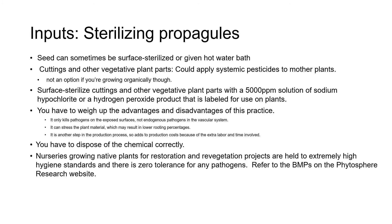Some nurseries surface sterilize propagules. In our module on seed I mentioned disinfecting seed with bleach solutions or hydrogen peroxide, and hot water baths for killing pathogens inside the seed are sometimes used. These treatments can also damage the seed and the temperature and length of time for which a seed is given a hot water bath can be species specific. So take great care if you're going to be surface sterilizing seed and do a lot of research beforehand. The same advice applies to cuttings and other vegetative plant parts.